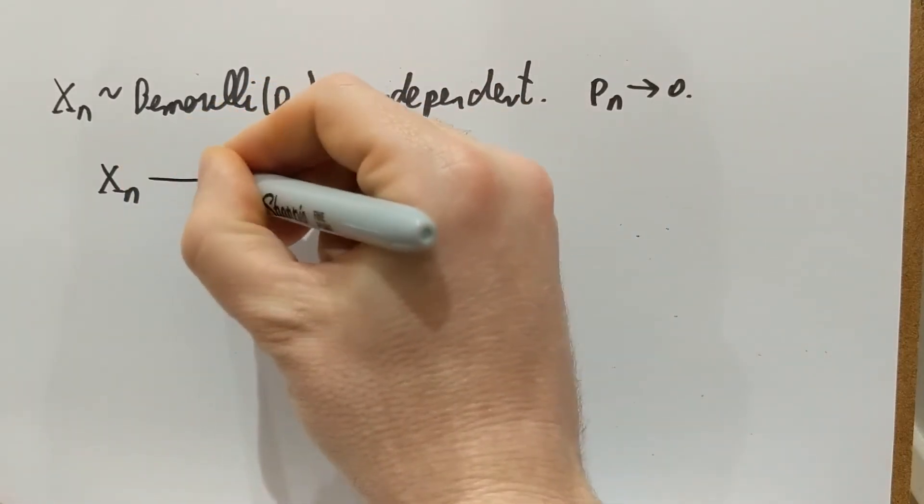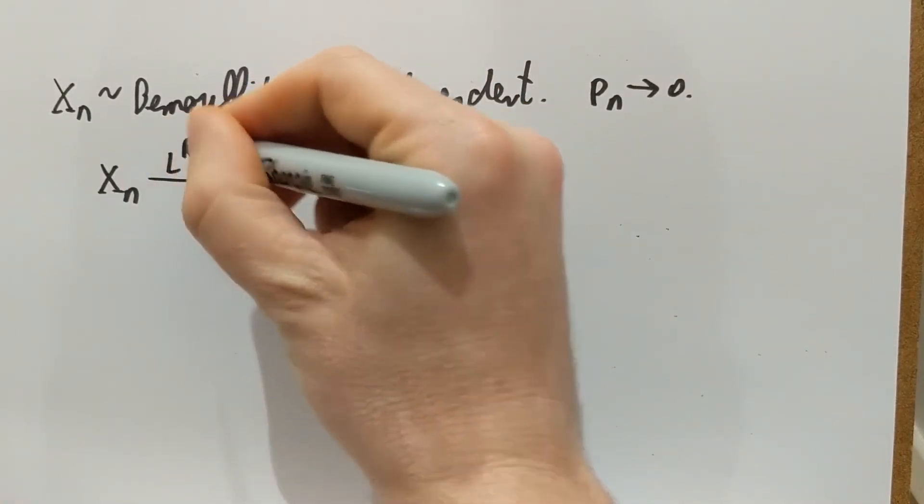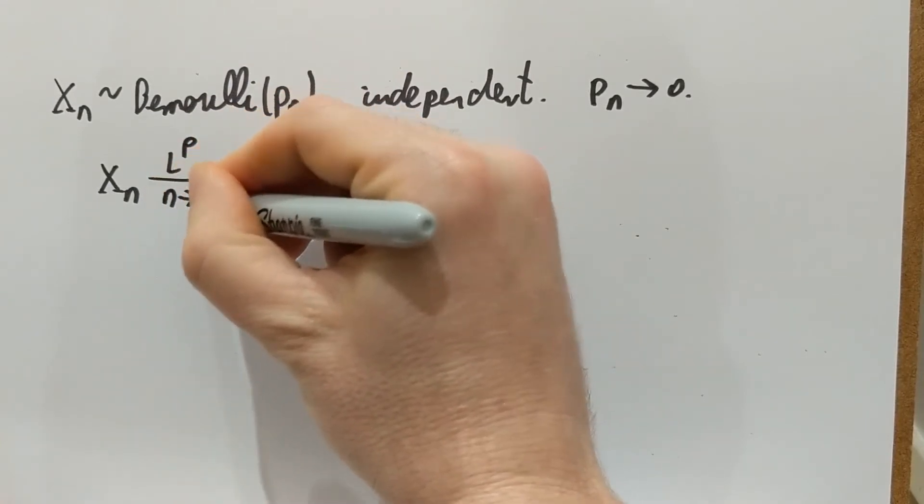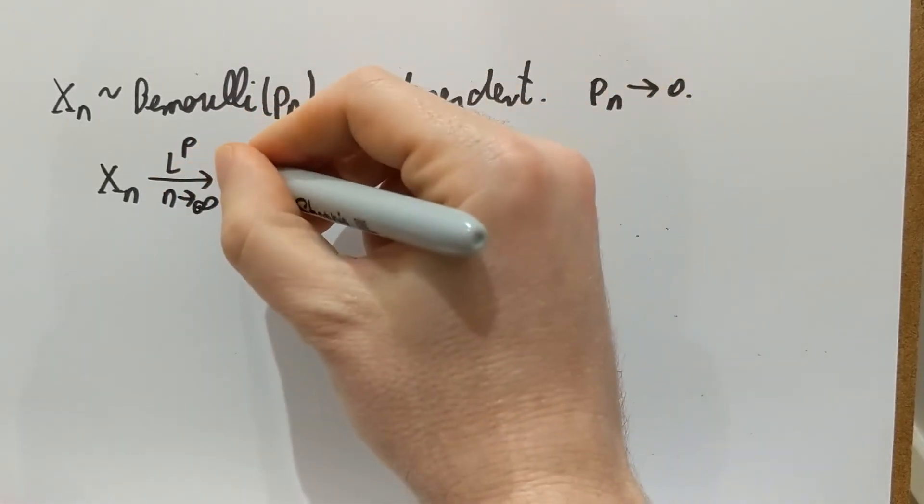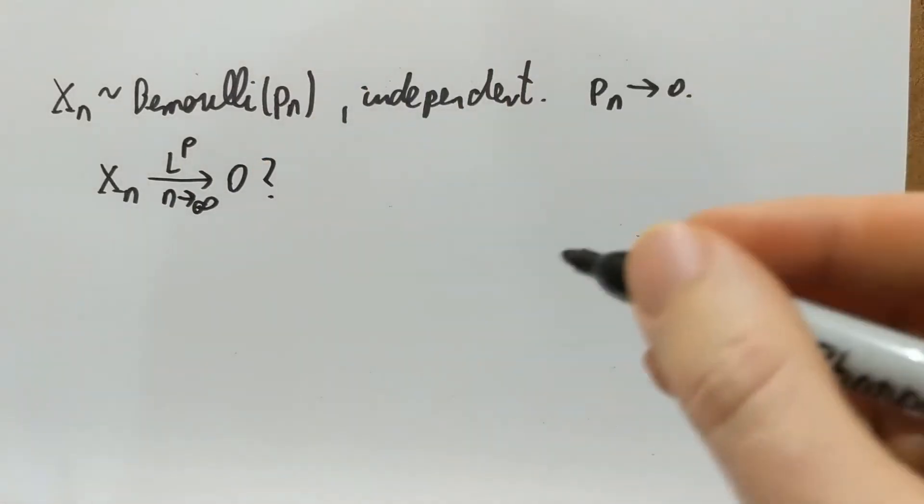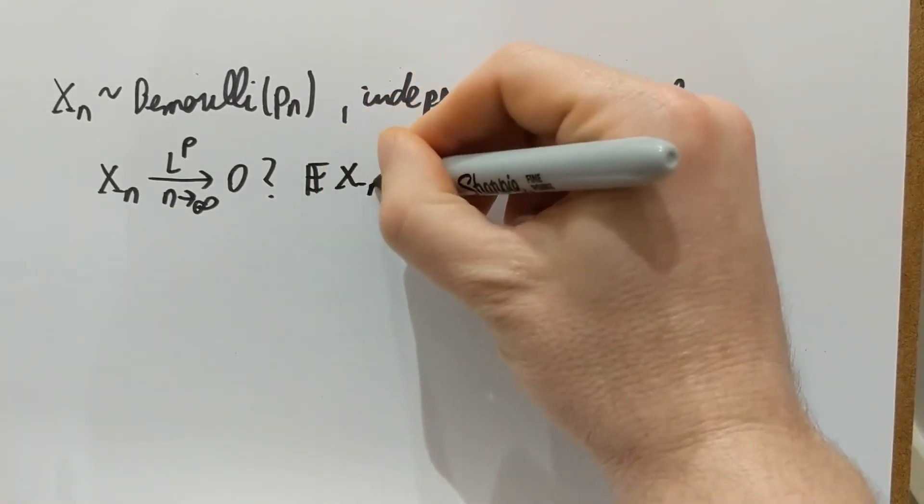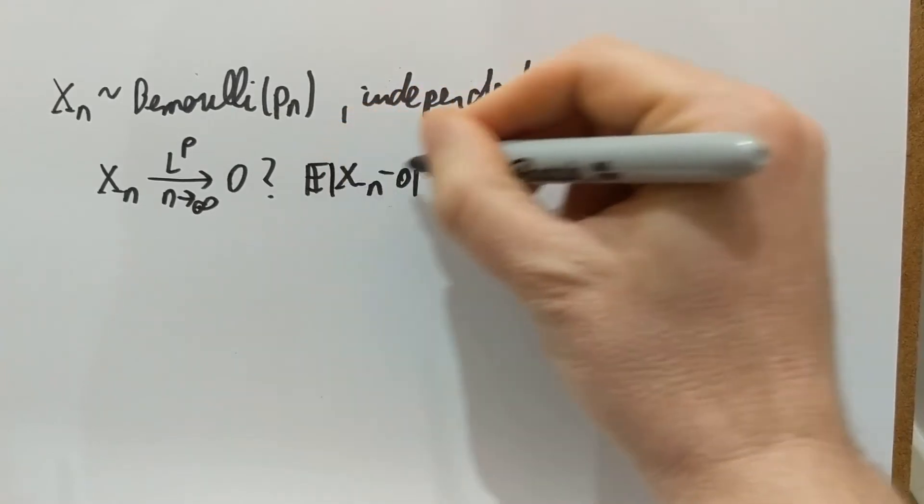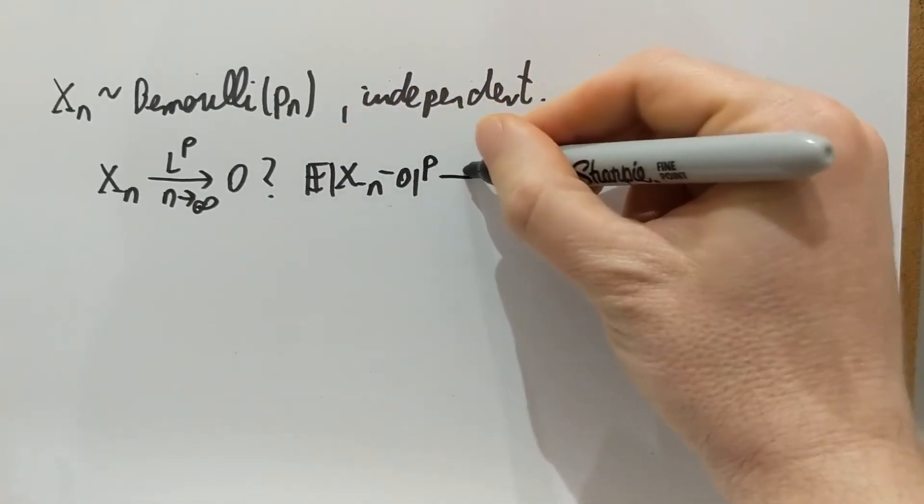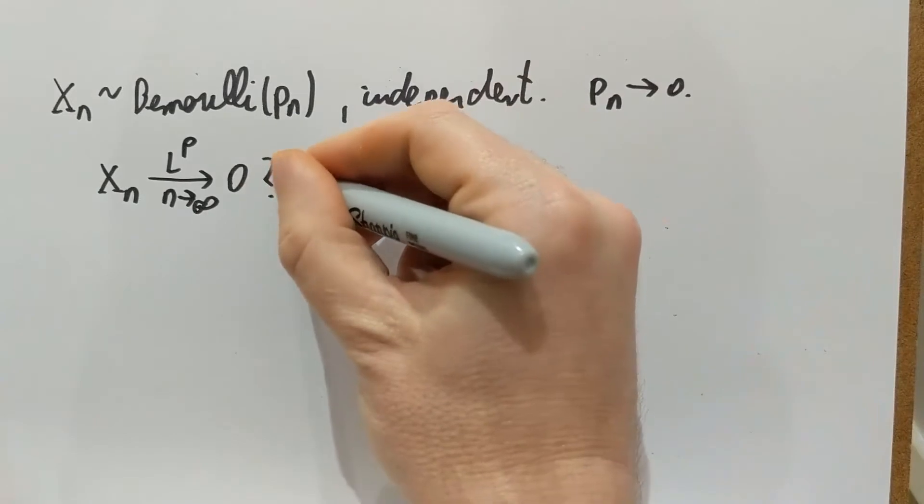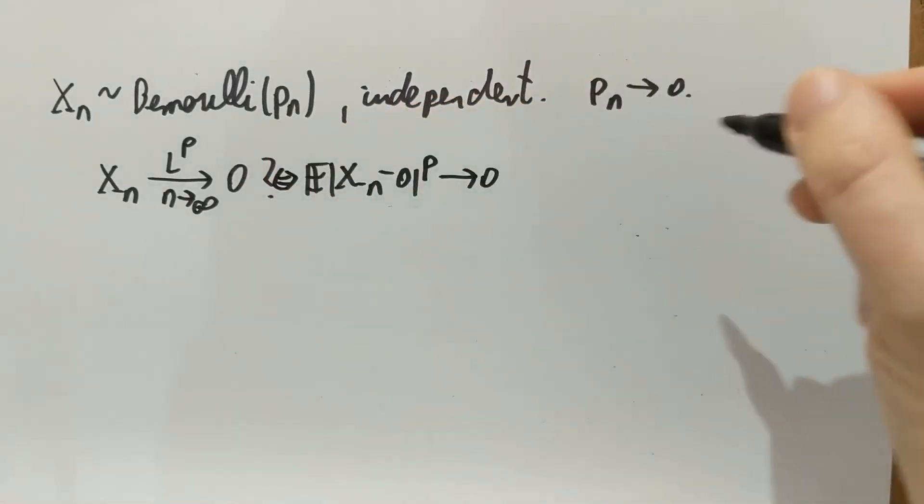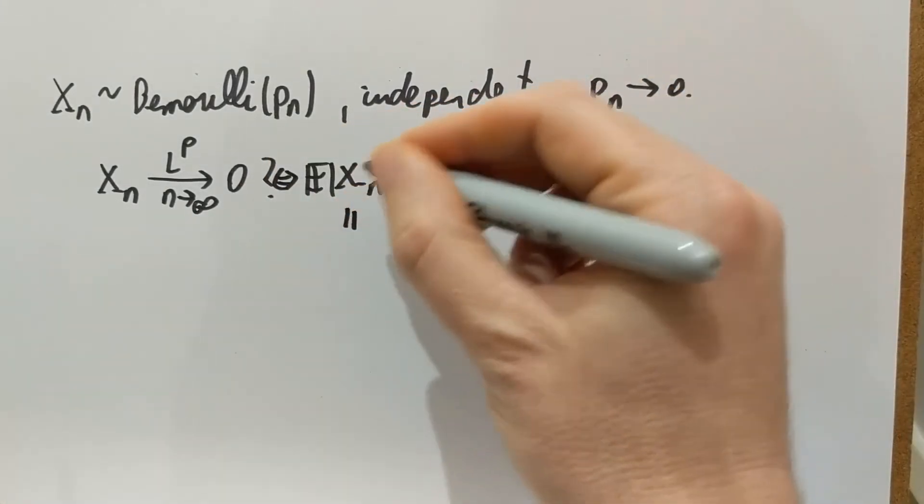So let's see when is it that Xn converges to zero in LP. What does that mean? Expectation of |Xn - 0|^P has to go to zero. So that's equivalent to that, and what is that expectation? It's very easy to calculate.